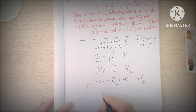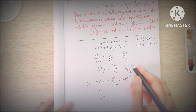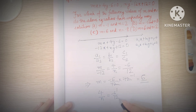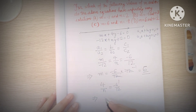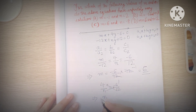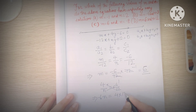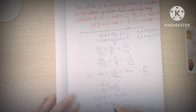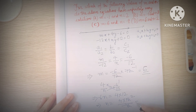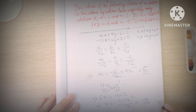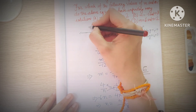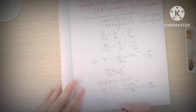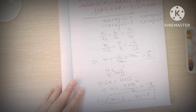Now for n: 4 by n equals minus 6 by 12. Cross multiplying gives minus 6n equals 4 into 12, so n equals 4 times 12 divided by minus 6. That simplifies to minus 8. So n equals minus 8. This matches option C: m equals 6 and n equals minus 8. So the answer for question number 2 is option C.